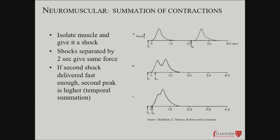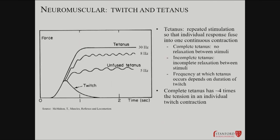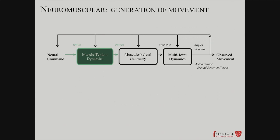If you take a muscle, isolate it, and give it a shock, you see force generation. Some interesting temporal dynamics already with that very simple thing. If you start to move your shocks close together, they can summate — a muscle can generate more force if you group two stimuli close together. If you carry that out to the limit, you get what's called tetanus — summating force generation that, with about 30 Hz activity, gives you a smooth, maximal force generation for a muscle. It can be up to about four times the peak force of an individual contraction.